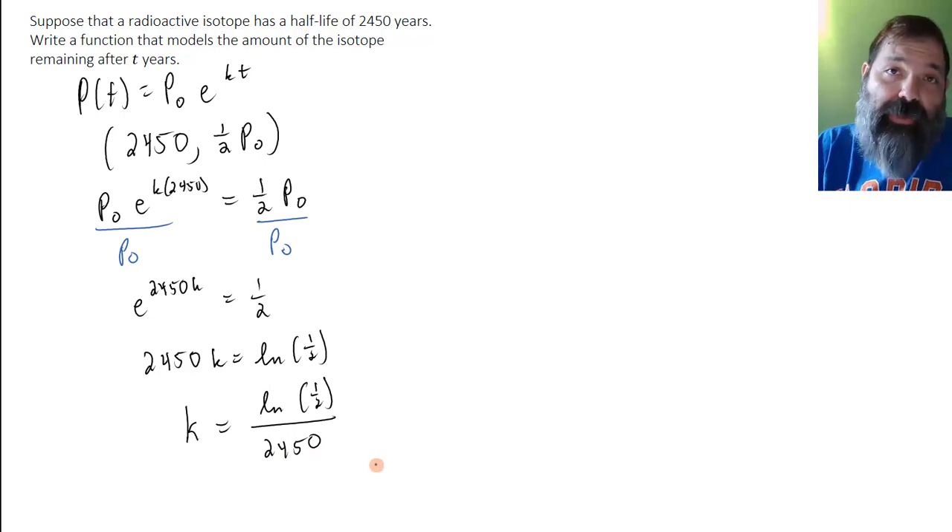All right, now we want to solve for k. Let's convert this to logarithmic form. Since our base is e, we apply the natural log. So 2,450k is equal to the natural log of one-half. And then dividing through by 2,450, k would equal the natural log of one-half divided by 2,450. And that's an exact value for k.